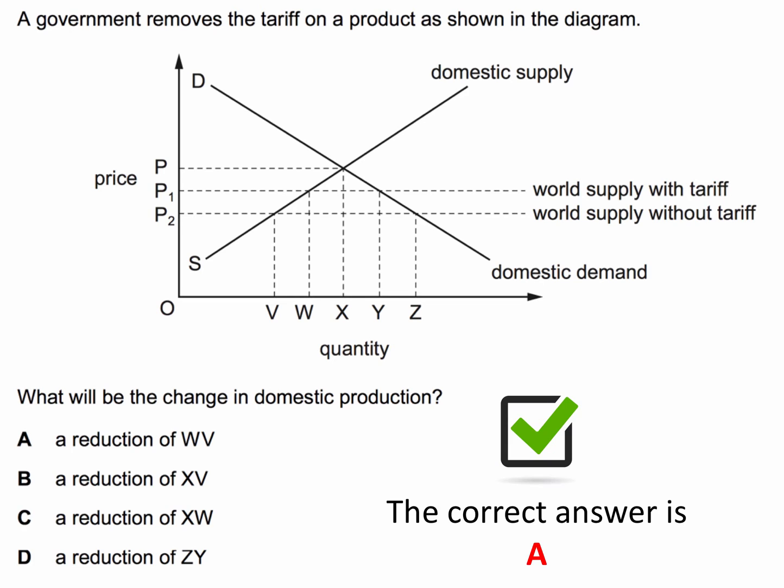The correct answer to this question is A. The removal of a tariff will lead to a fall or contraction of domestic production equal to the distance WV — this distance here on the diagram.